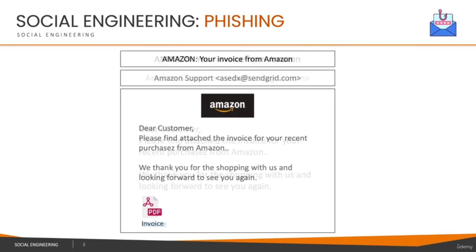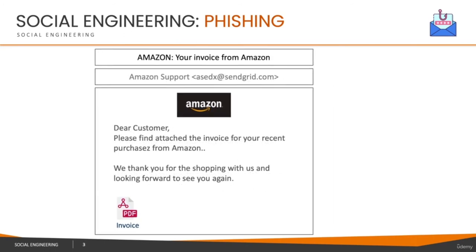Research says that on average a user spends roughly 15 seconds skimming through an email before making a decision. So it's always useful to be on the lookout for red flags. The first thing to keep in mind: ignore whatever display name it shows — you have to look at the actual email address. You can expand the email header and see the actual sender's email, which in this case has nothing to do with Amazon. A legitimate email should be coming from @amazon.com. That's the first red flag.